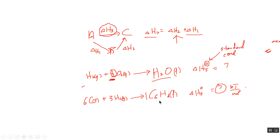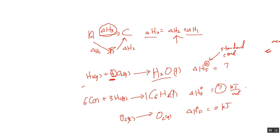When it comes to elements in their natural state — for example, O2(g) — oxygen exists as O2 in nature. So the 'formation' of O2 from O2 involves no reaction. Therefore, for any element in its natural state under standard conditions, the standard enthalpy of formation is equal to zero.